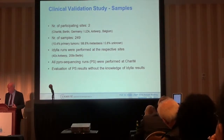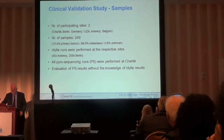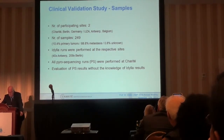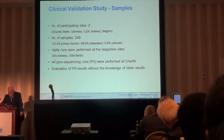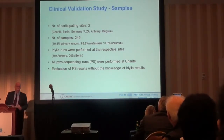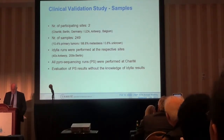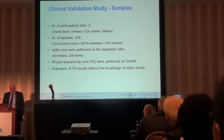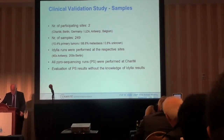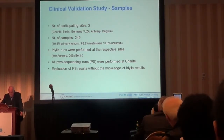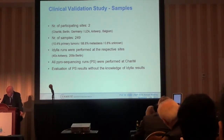This was a clinical validation study. There were two participants: one was the Charité in Berlin, and one site in Hamburg, Belgium. The number of samples altogether was 249: 10% primary, 88% metastasis, and 1% unknown origin — but all were proven to be malignant melanoma by immunohistochemistry. The IDYLLA runs were performed at the respective sites — 40 in one site, 209 in Berlin. All pyrosequencing runs were performed at the Charité, and the evaluation of pyrosequencing results was done without knowledge of the IDYLLA results.